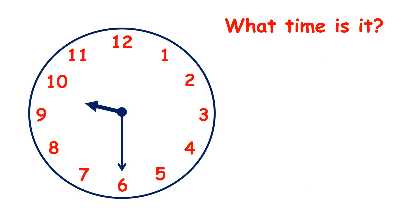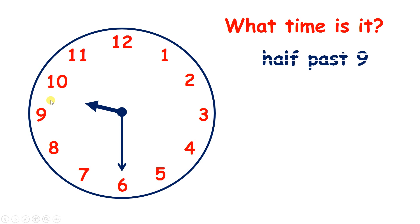So what time is it here? The minute hand is pointing to 6, so it's half past, and the hour hand is in the middle of 9 and 10, so it's half past 9. Or on a digital clock, we'd see 9:30.